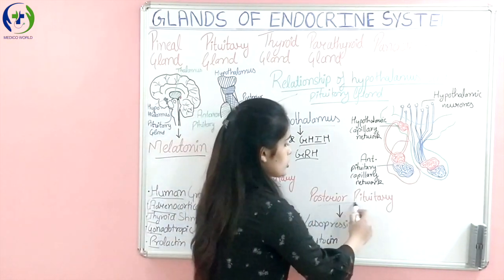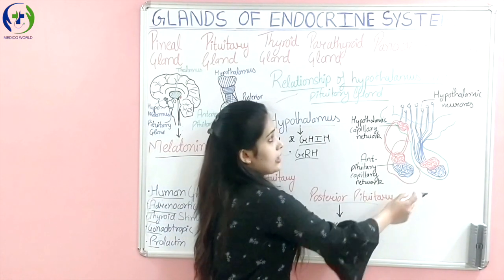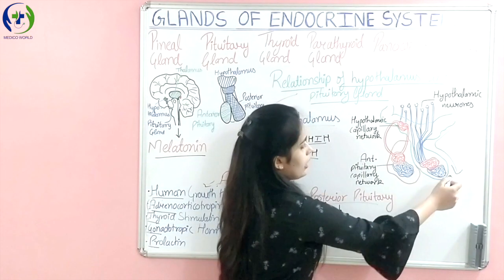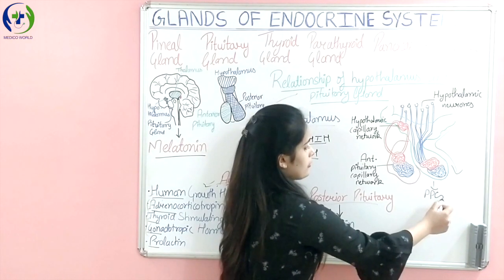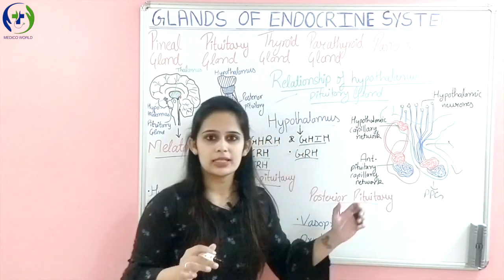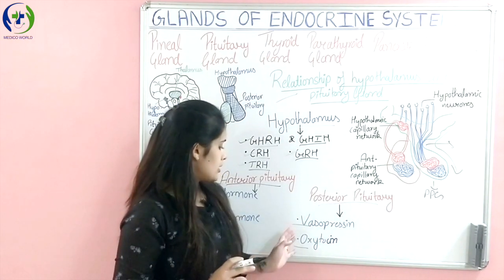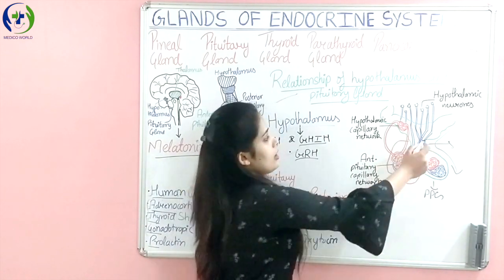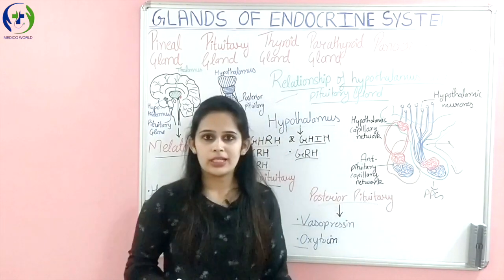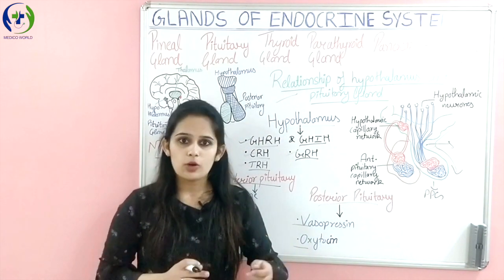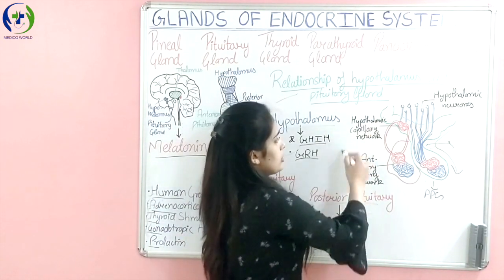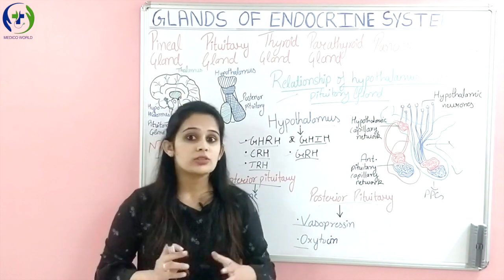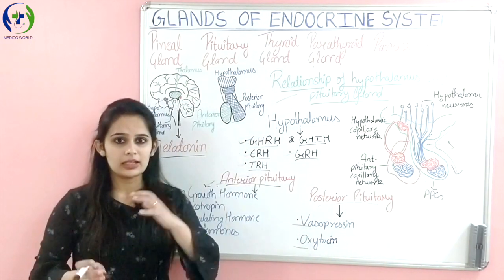Now what is the connection between the hypothalamus and the posterior pituitary gland? The hypothalamus extends downward and forms the posterior pituitary gland, connected by the infundibular stem. Vasopressin and oxytocin are formed in the hypothalamus, and when there is stimulation, these hormones travel down into the posterior pituitary gland, where they are stored and released according to need. This network together is called the hypothalamo-hypophysial tract or hypothalamo-hypophysial portal system.